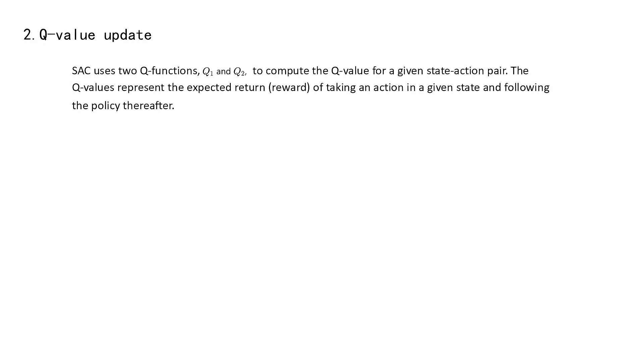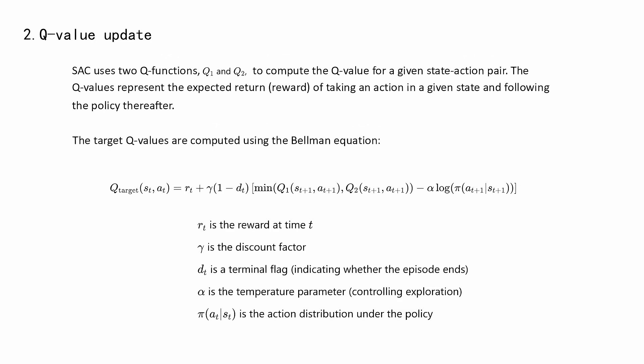Q Value Update: SAC uses two Q functions, Q1 and Q2, to compute the Q value for a given state-action pair. The Q values represent the expected return, or reward, of taking an action in a given state and following the policy thereafter. The target Q values are computed using the Bellman equation as follows.